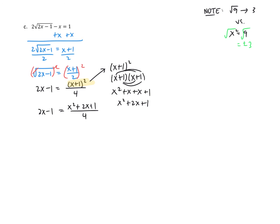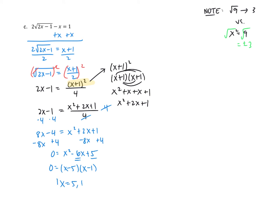Now we're done with the radicals and just need to solve. We don't like fractions, so let's multiply every term by 4 — the 4s on the right cancel, leaving x squared plus 2x plus 1, and on the left we get 8x minus 4. This is now a quadratic. Moving everything to one side, we get x squared minus 6x plus 5 equals 0. Looking for two numbers that multiply to 5 and add to negative 6 — that's negative 5 and negative 1 — giving us answers of 5 and 1.